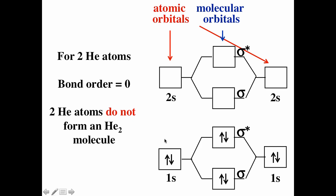For helium, two helium atoms each have two electrons, filling both sigma bonding and sigma anti-bonding orbitals equally. Because we have the same number of electrons in bonding and anti-bonding orbitals, helium does not form a molecule — it is not more stable for helium atoms to bond, so they remain separate.